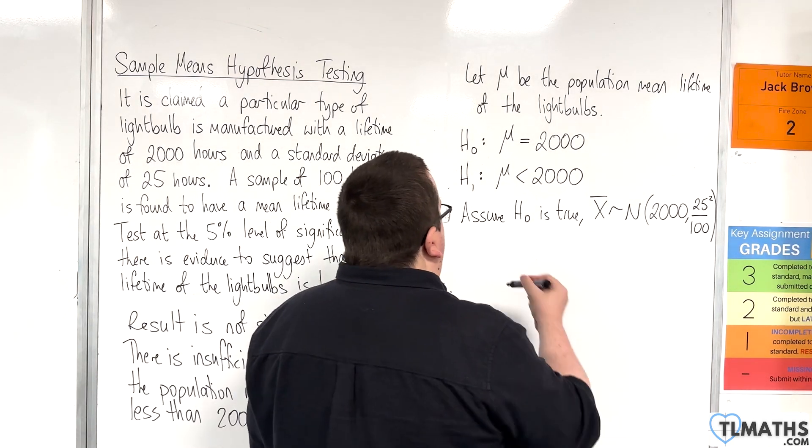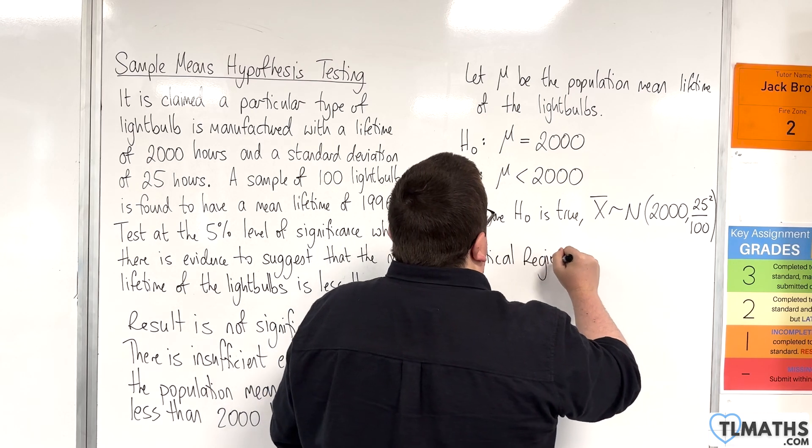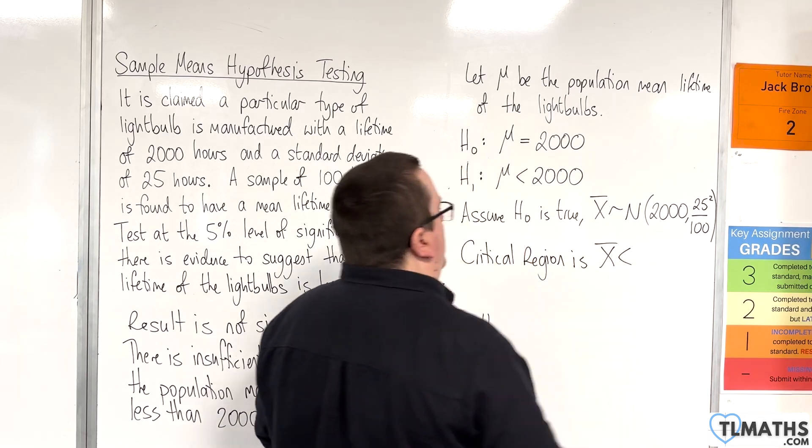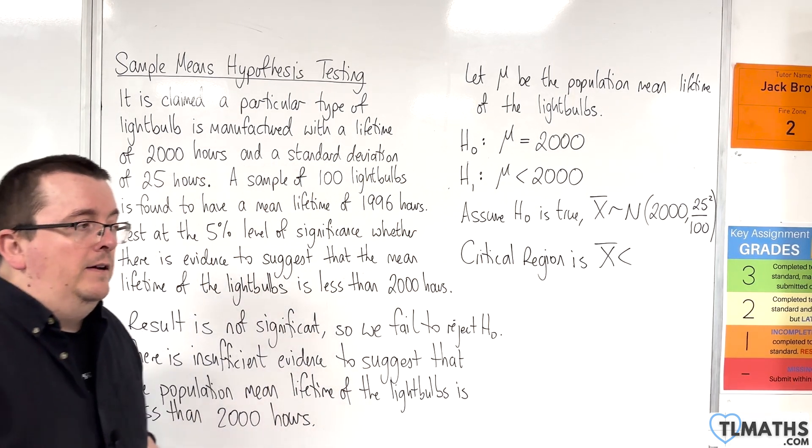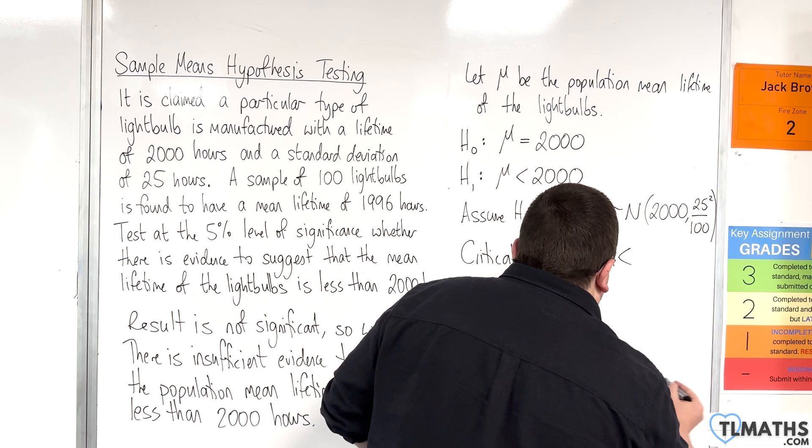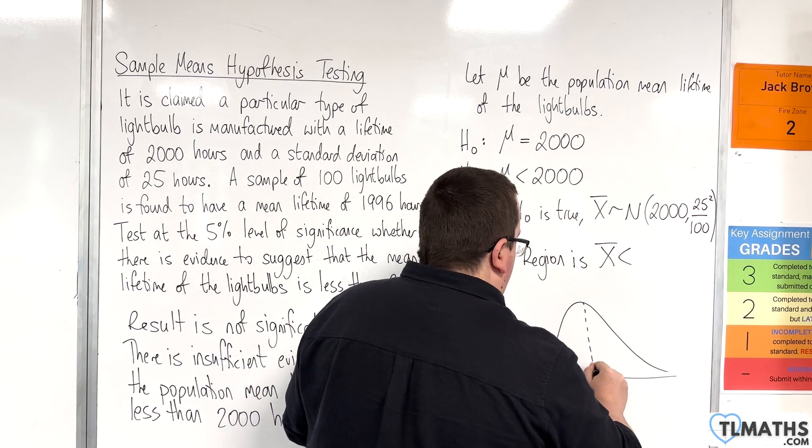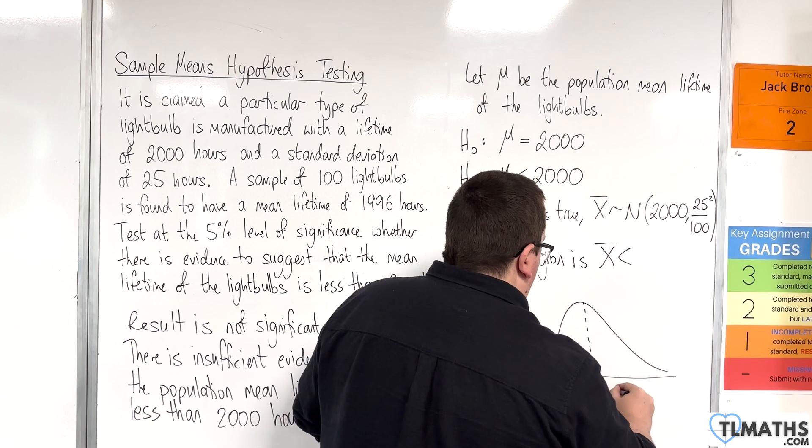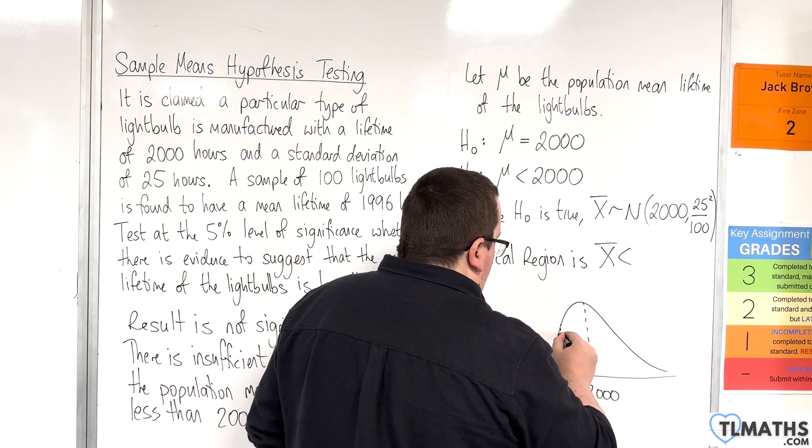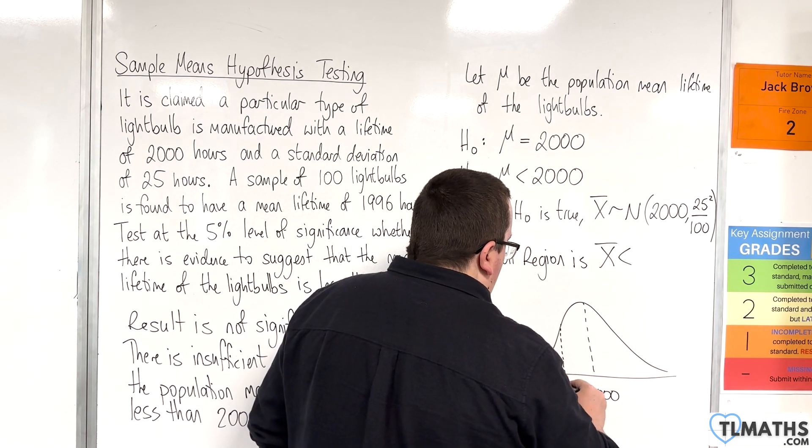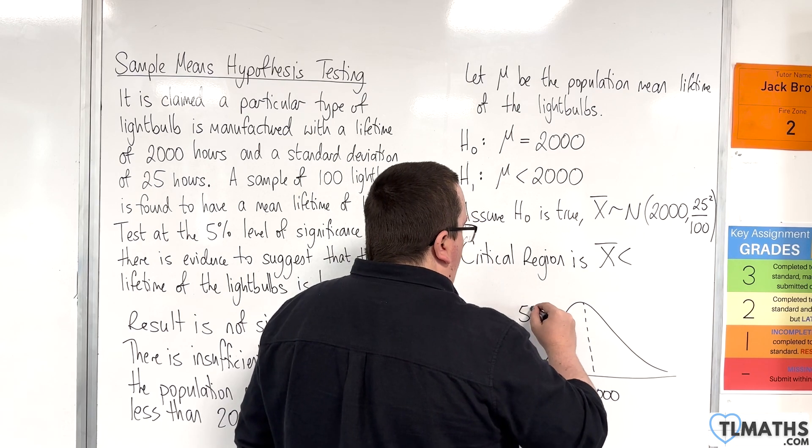So, we need to find the critical region. Now, the reason why I'm writing down critical region is x̄ is less than, I know it's going to be less than a certain value because, visually, here is our normal distribution, or my attempt at one anyway. It has a mean of 2,000. And what I'm trying to find is this value here. This is the critical value, so that this area is 5%.